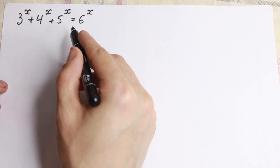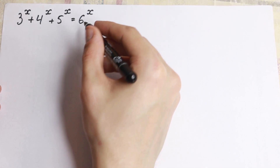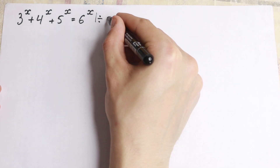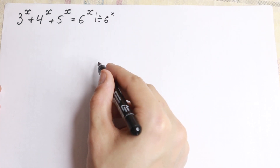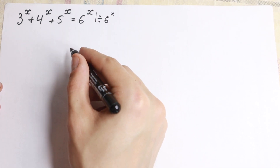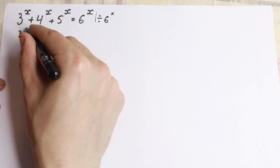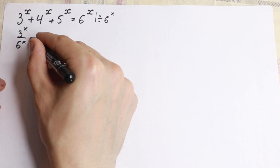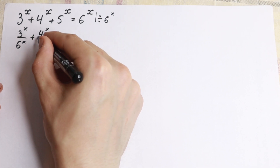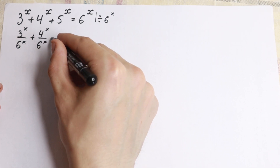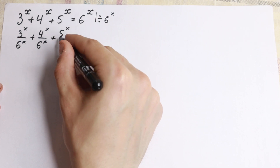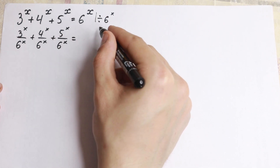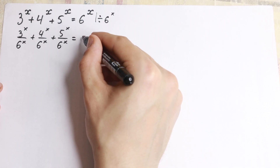I suggest firstly to divide both parts by 6 to the power x. If we divide both sides by 6 to the power x, we will have 3 to the x over 6 to the x, plus 4 to the x over 6 to the x, plus 5 to the x over 6 to the x. And of course equal to 1 on the right side.